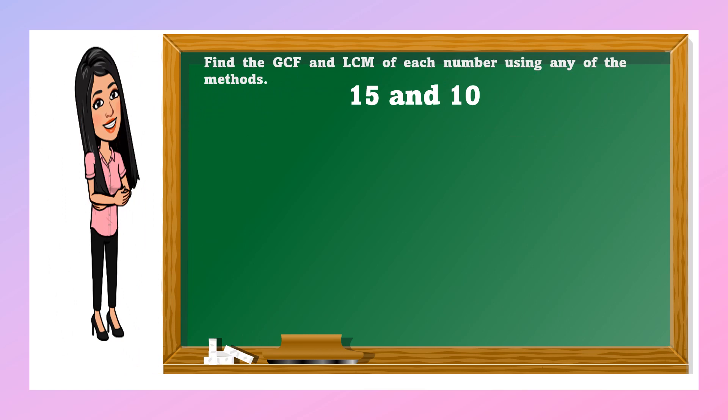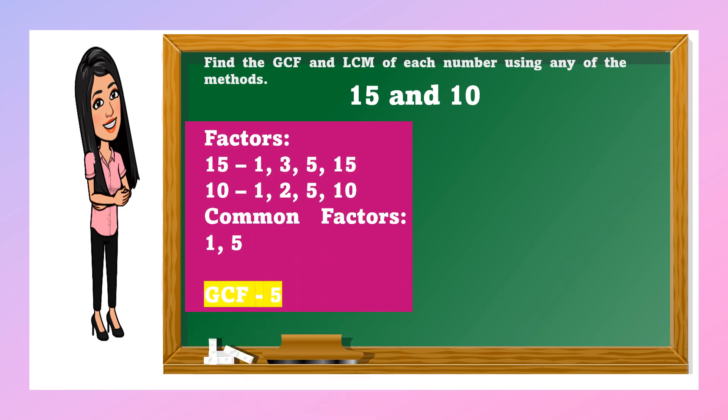Let us find the GCF and LCM of numbers using any of the methods. So, 15 and 10. Let us find the factors of 15: 1, 3, 5, 15. And the factors of 10 are 1, 2, 5, and 10. The common factors of 15 and 10, we have 1 and 5. So, the GCF or the greatest common factor, the larger of the two is 5.